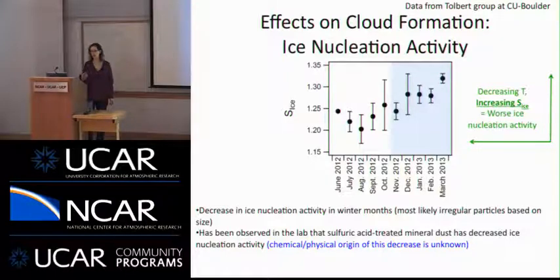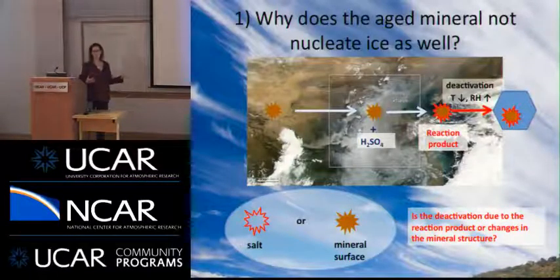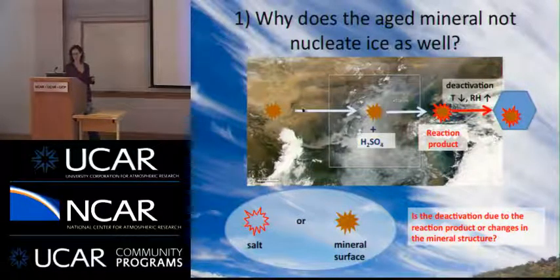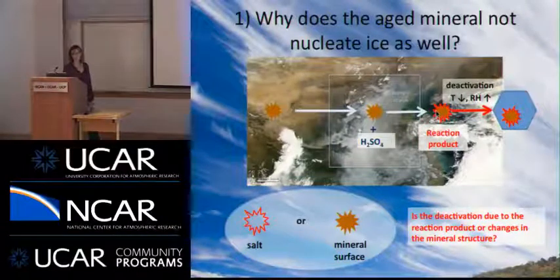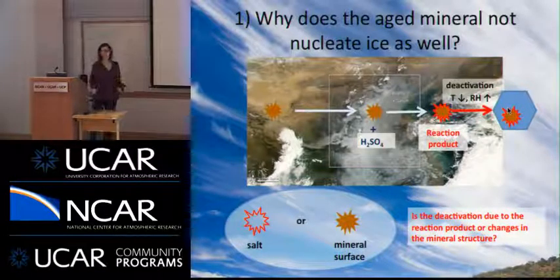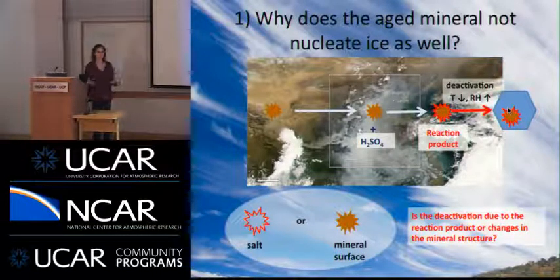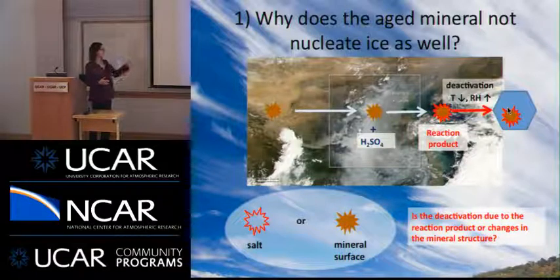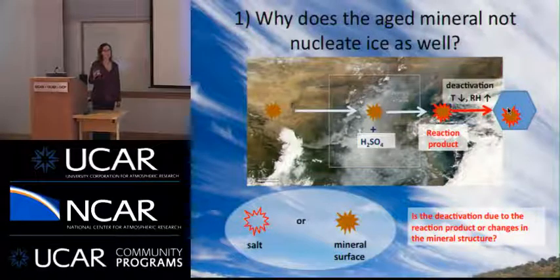It's been observed in the laboratory that when you treat many different types of minerals with sulfuric acid, the ice nucleation activity decreases, but we don't understand why that deactivation occurs. So in the first part of this talk I want to show you why. Here's a generalized scheme: particles come from some source, are transported over a polluted region, interact with sulfuric acid, might form a reaction product, and we observe deactivation with respect to ice nucleation. There have been two main hypotheses: one is that the salt or reaction product is causing the deactivation; the other is that changes to the mineral surface cause the deactivation.